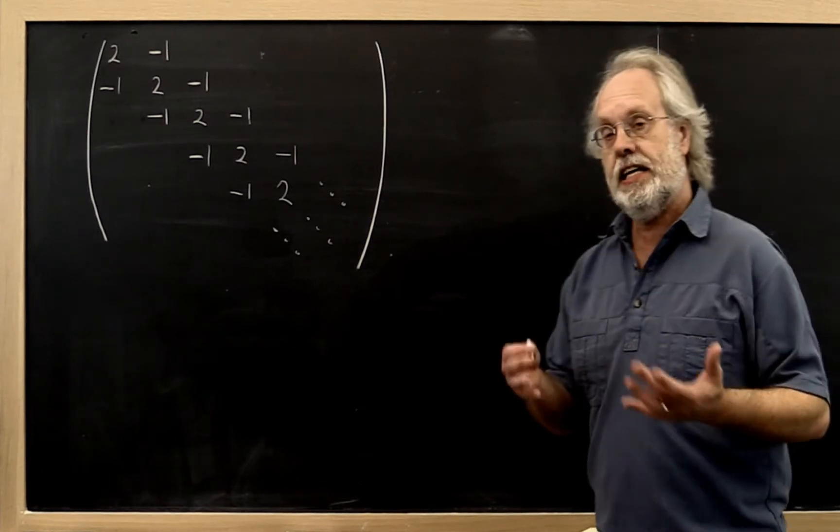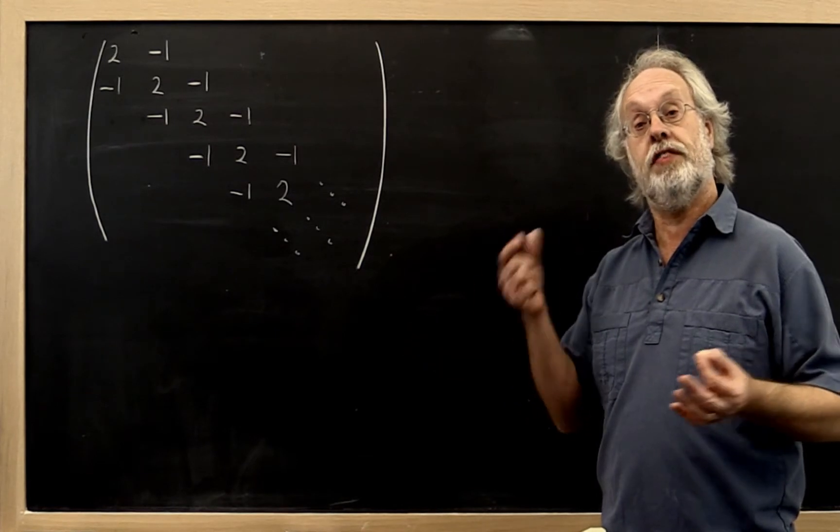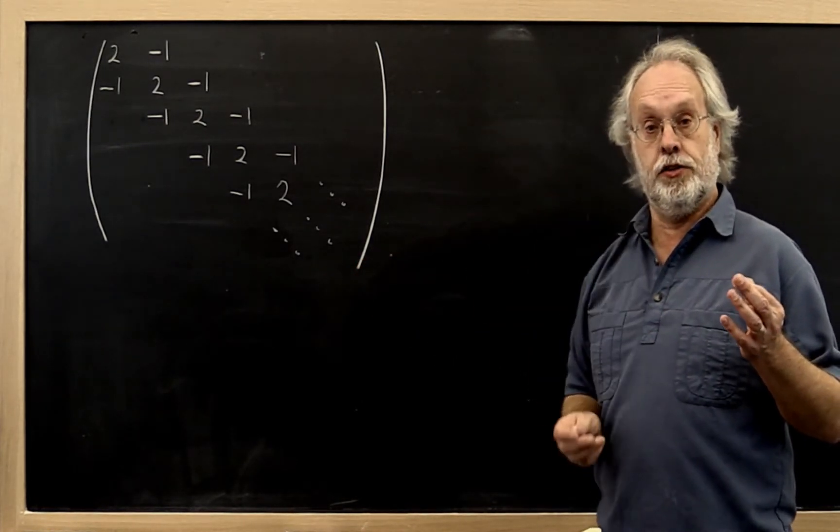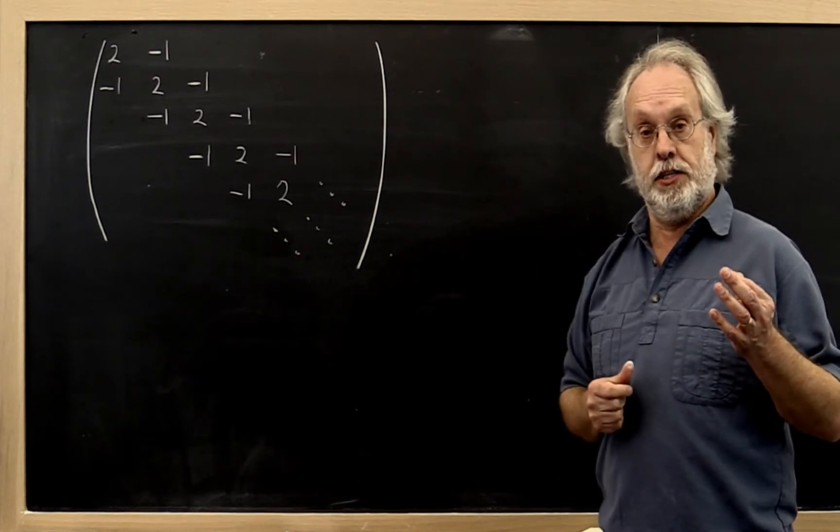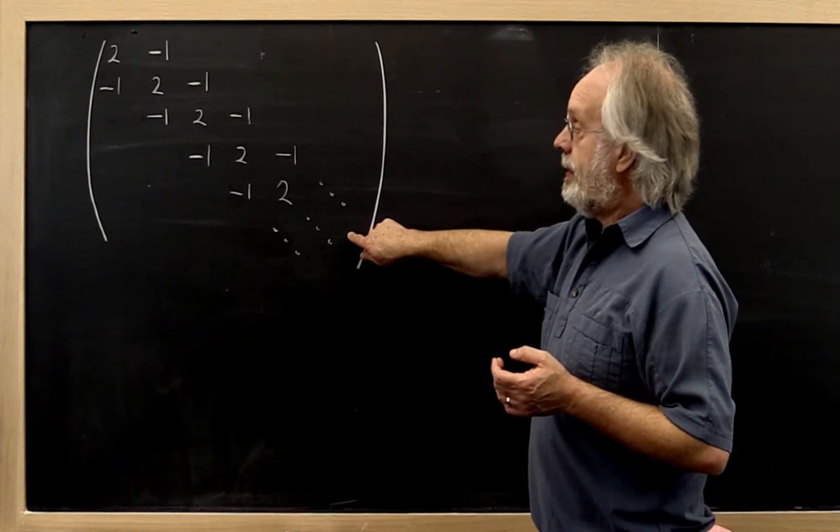If instead we did Poisson's equation in one dimension, for example, if instead of having a membrane we had a string where some kind of wave hit the string and we wanted to look at displacement, then we would end up with a tridiagonal matrix.